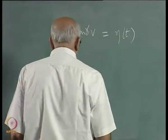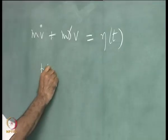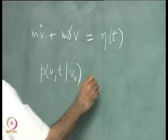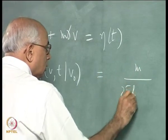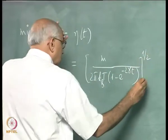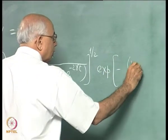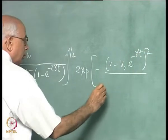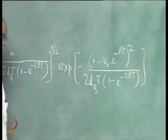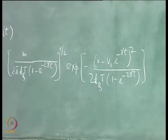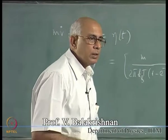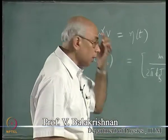We saw that this implies, and you can show it is implied by the fact, that the conditional density of velocity V at time t given that it was V₀ at t=0 is given by the normalized distribution: 1 over (2π k_B T (1 – e^{–2γt})) as a time-dependent normalization factor, multiplied by a Gaussian — minus (V minus the average value) squared divided by the variance, which is 2k_B T (1 – e^{–2γt}). This is the Ornstein-Uhlenbeck distribution.